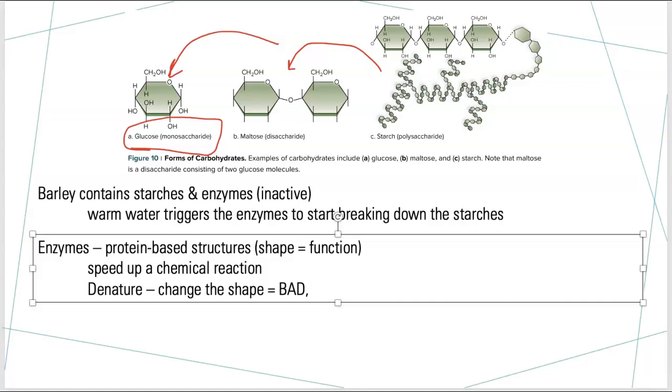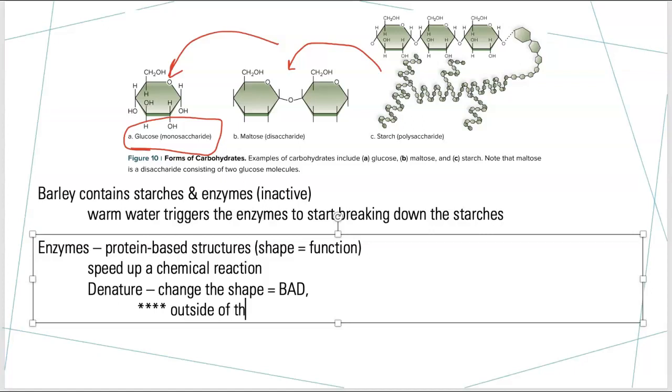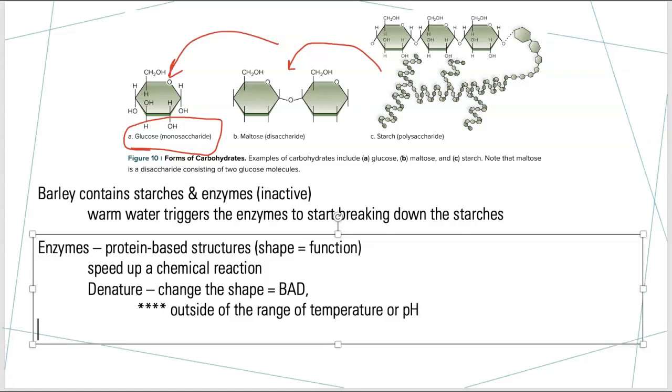So the two factors that will change the shape of an enzyme - the two factors that change the shape is if you go outside the range of temperature or the range of pH. All enzymes have an ideal range they want to work in, and if you move them out of it, it changes the shape. It's like melting a key or bending something. It doesn't work anymore. So we want to keep things in that ideal range.